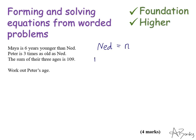So now I need to represent Maya's age. So Maya is six years younger than Ned. That means to work out Maya's age I will do Ned's age take away six.